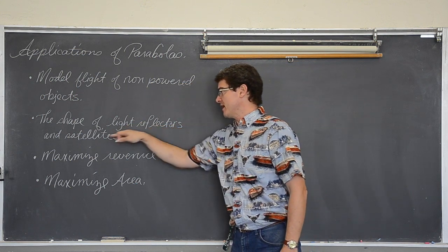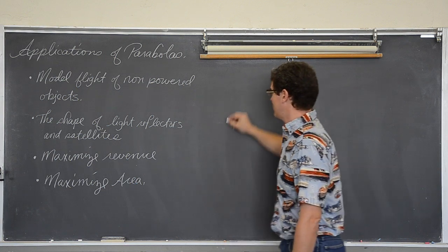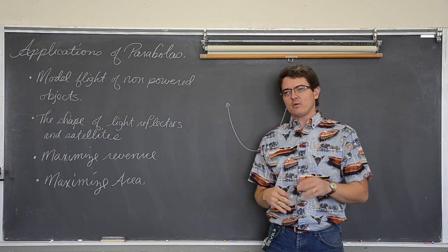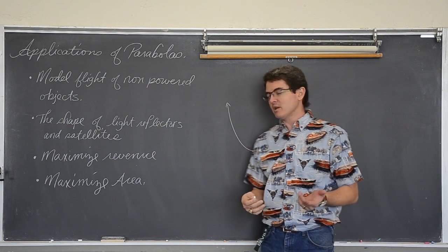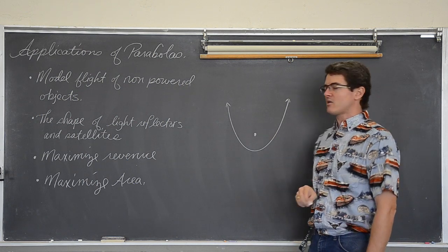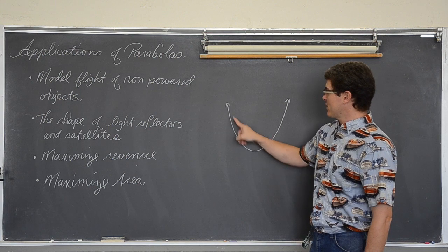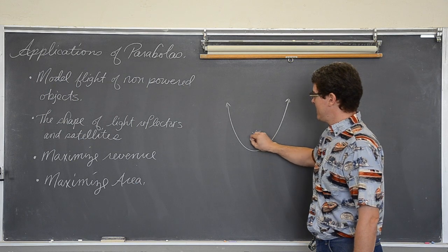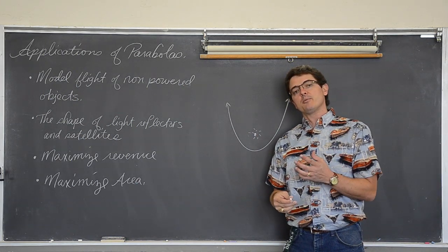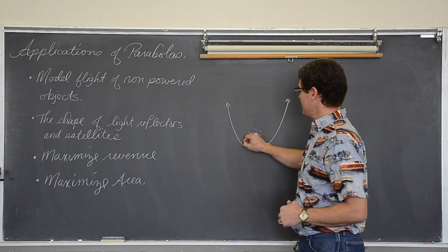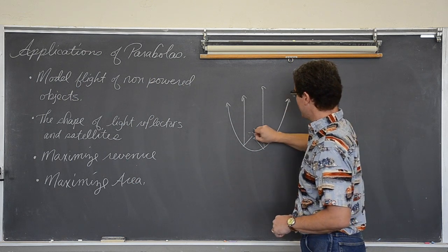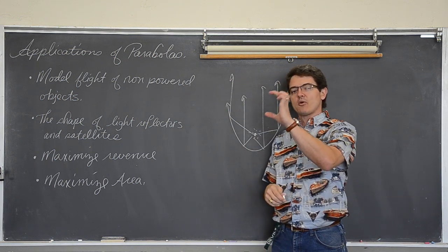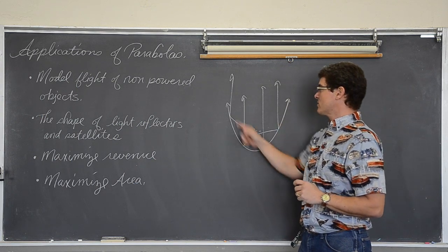The shape of light reflectors and satellites. When we do conic sections later — parabolas, ellipses, circles, and hyperbolas — you are going to learn that there is something in a parabola called a focus point. If this were the shape of a lightbulb and light is emitted from the focus point, all that light is going to hit the parabola and reflect out in a series of parallel lines. That is why a flashlight has just that little bright spot of white light — the reflector is in the shape of a parabola.